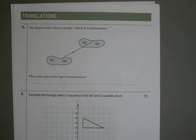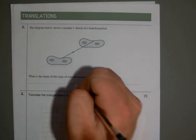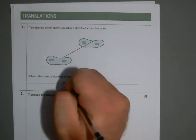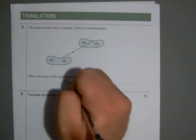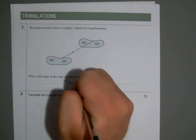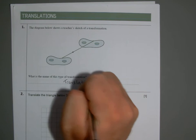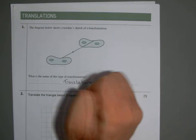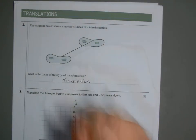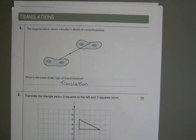Question one is a translation. So when it says what is the name of this type of transformation, you literally write down that it's a translation. That's the technical term for it.